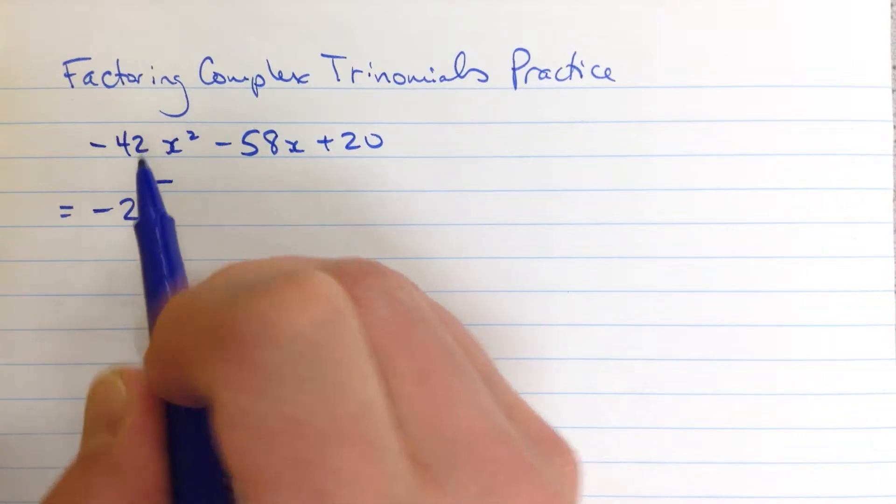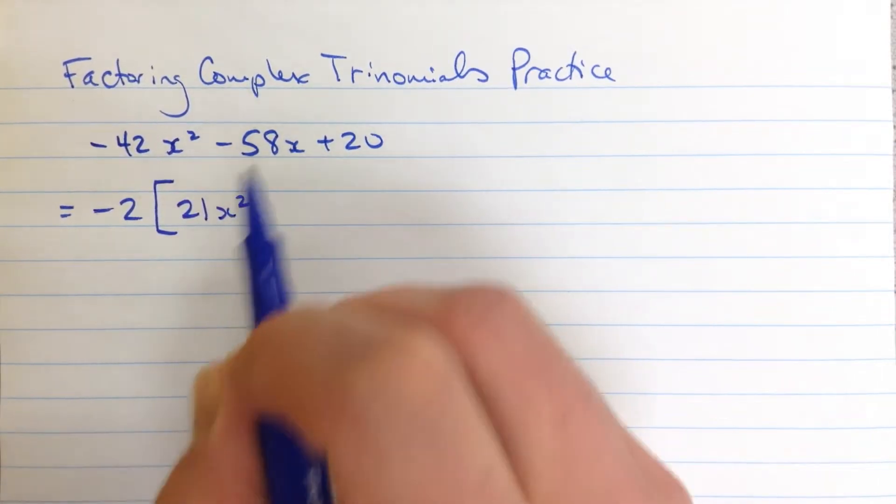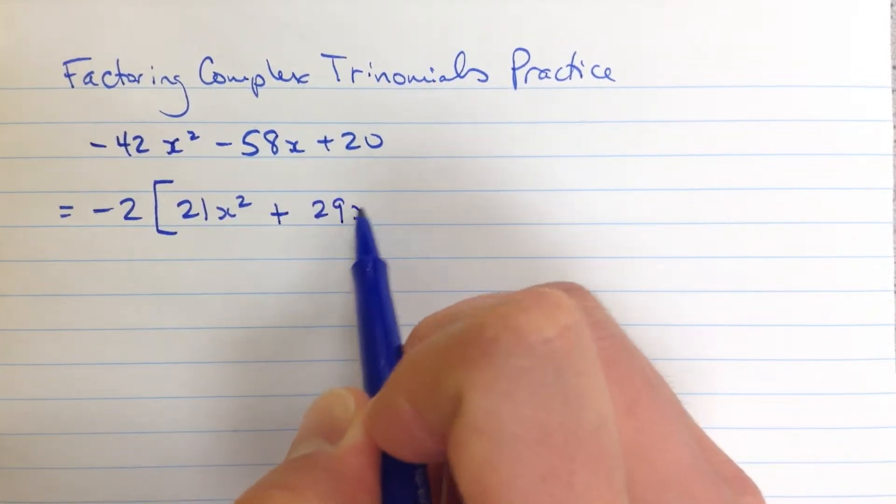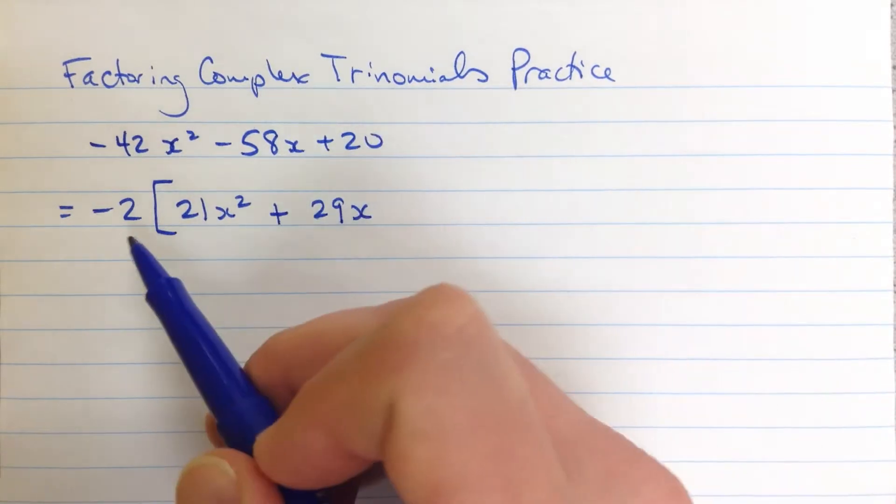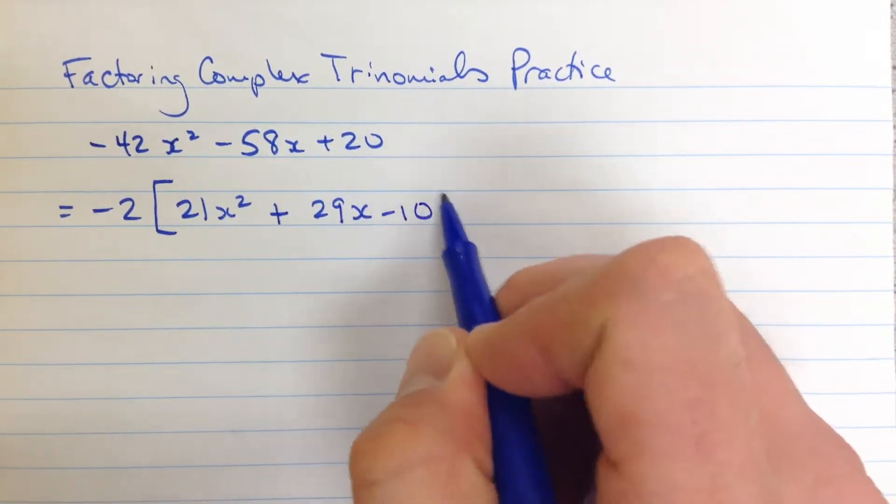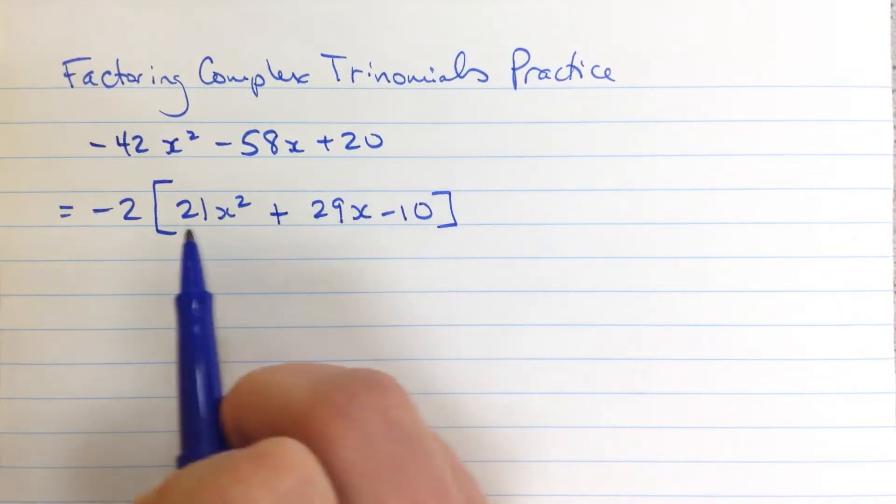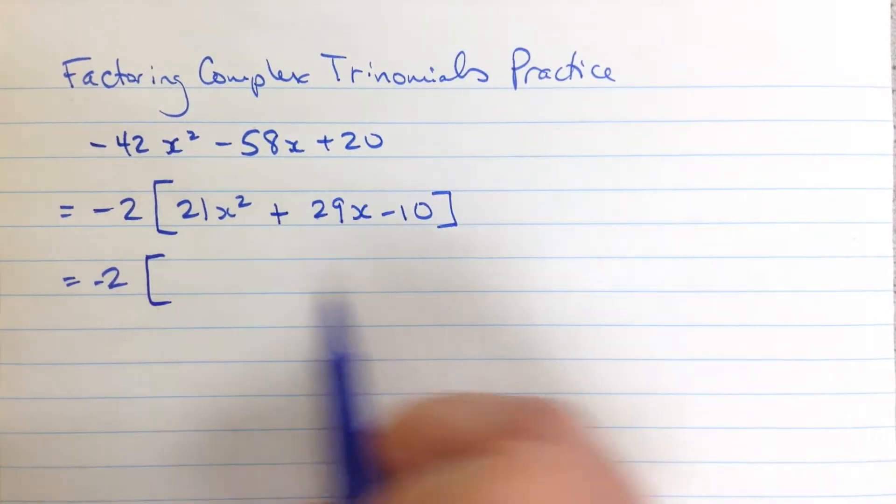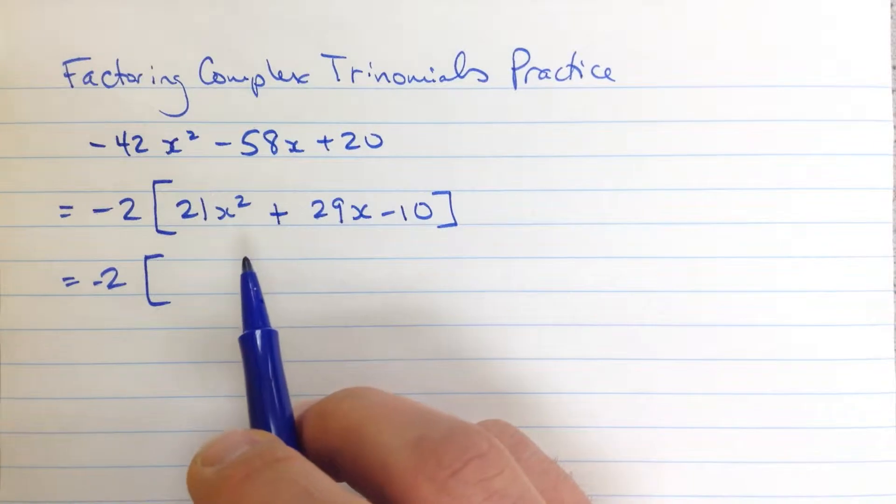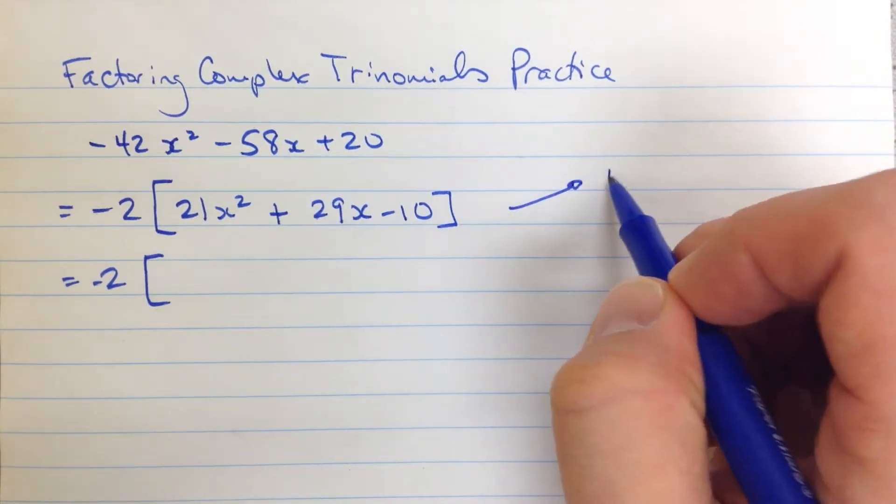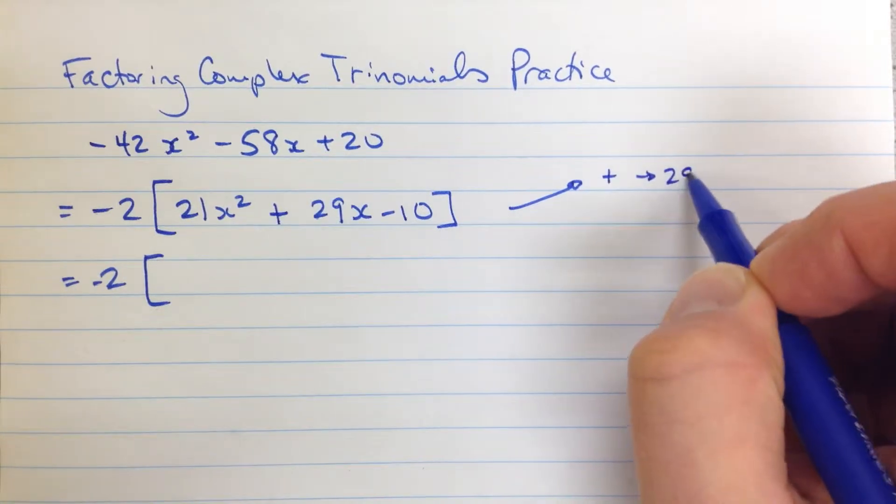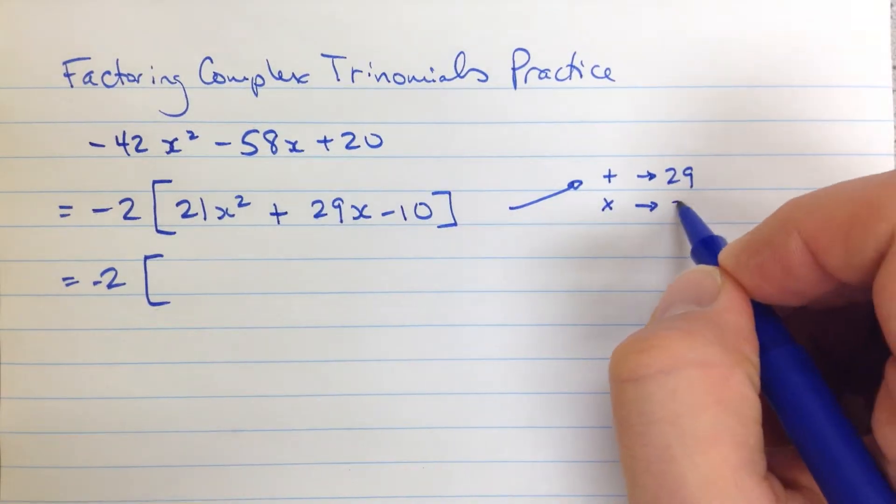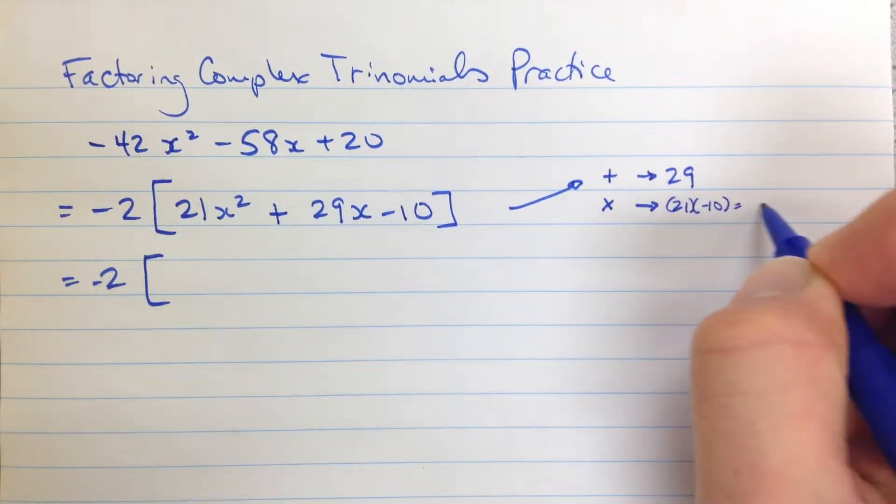So negative 2 factored out of this negative 42 leaves me with 21x². Here I'm going to end up with positive 58 divided by 2 is 29, and then I still have that x. And 20 divided by negative 2 is negative 10. So now I have a slightly smaller trinomial to work with, and I keep that negative 2 out front here the whole time. So I'm going to use my square brackets. Inside of here, what I'm looking for are two numbers that are going to add together to give me positive 29, and they're going to multiply together to give me 21 times negative 10, which is negative 210.